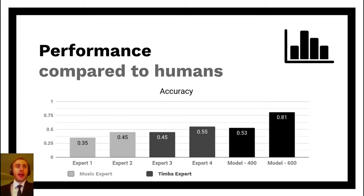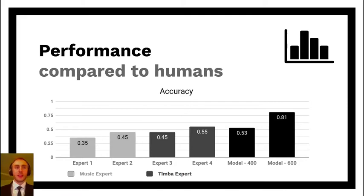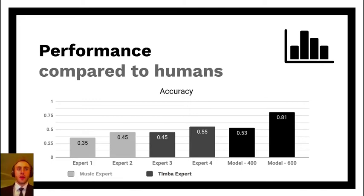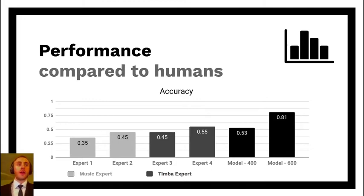To get some context, I asked four experts to do the same task, which was to classify 20 examples: two expert musicians who I explained the class system to verbally, and two subject matter experts in timba. Only one out of those four managed to get a score above 50%. So on one hand, the model does surprisingly well compared to human experts on the topic. But on the other hand, this points out a really relevant point about how humans would approach this task, which I'll talk about in a moment.